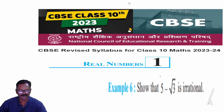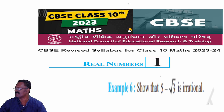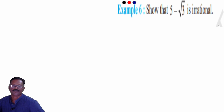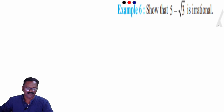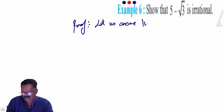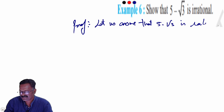Hi students, I am going to talk about the CBC class 10th maths, first chapter real numbers, example 6. Example 6: show that 5 minus root 3 is irrational. So, let us assume that 5 minus root 3 is rational.